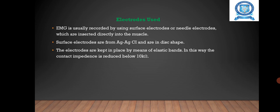Electrodes used: EMG is usually recorded by using surface electrodes or needle electrodes which are inserted directly into the muscle. Using surface electrodes or needle electrodes, you can pick up the potentials produced by the contracting muscle fibers.